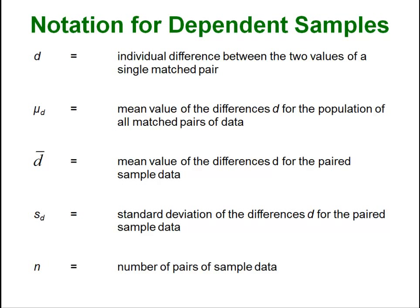Our notations for dependent samples: instead of talking about x bar, we are now going to talk about d as being an individual difference between two values of a matched pair. And then mu sub d is going to be the mean of those differences, and then instead of x bar we are going to have d bar which is going to be the mean difference for our sample data. The mu sub d is going to be the average difference for the population of matched pairs, whereas d bar is going to be the actual observed difference from our sample. And then we will have an s sub d for the standard deviation of these differences, and then n is still the number but in this case number of pairs of data.